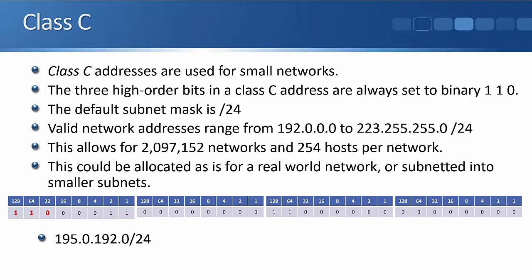That's something you're going to know by heart later on — a class C network has 254 hosts up to that amount. With a class C, that's small enough that it could be allocated as-is for a real world deployment, or if we wanted to, we could subnet it into smaller networks as well.